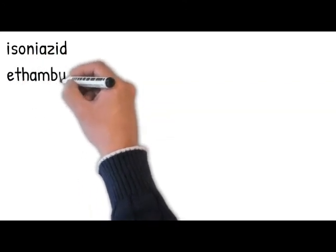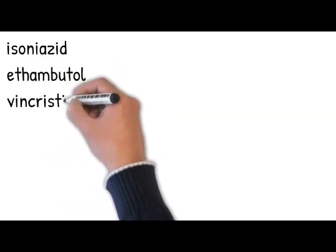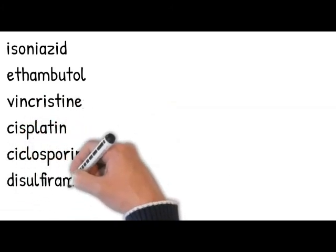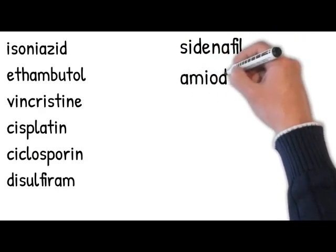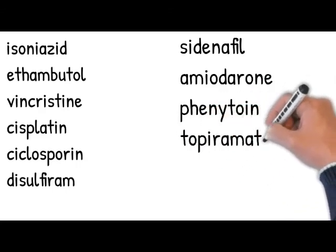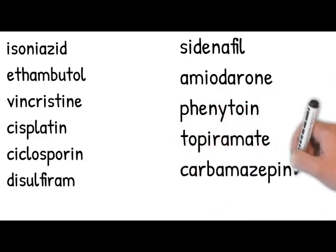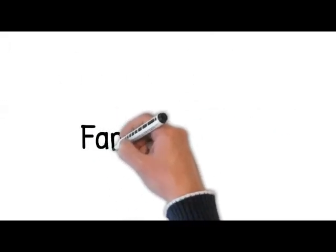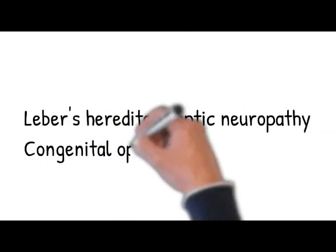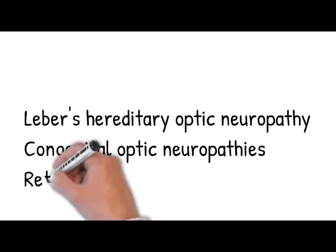Medication — what medications do you use? Are you on medication for any disease? Isoniazid, ethambutol, vincristine, cisplatin, ciclosporin, disulfiram, and amiodarone, phenytoin, topiramate, and carbamazepine may be possible causes. Family history — for carcinoma, history in family is important. Ask: is anyone in your family diagnosed with a sinister disease, cancer, family history of Leber's hereditary optic neuropathy, other congenital optic neuropathies, and retinitis pigmentosa?